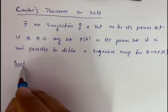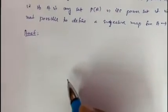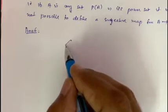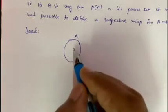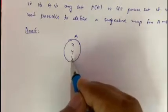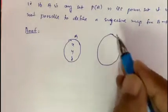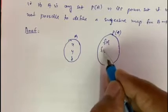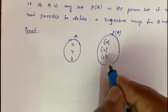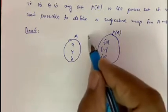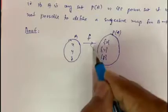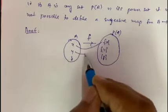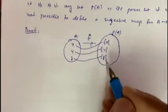Proof. Suppose A has some elements like X, Y, Z. Then its power set P(A) will definitely have the sets {X}, {Y}, {Z}. So, if we map F from A to P(A), then F takes X to {X}, Y to {Y}, and Z to {Z}, suppose.